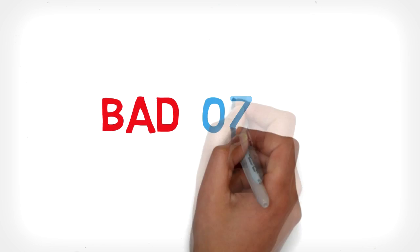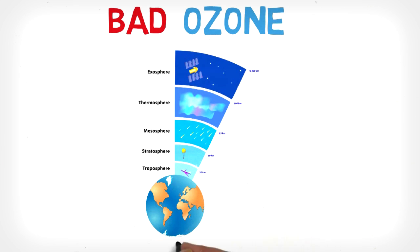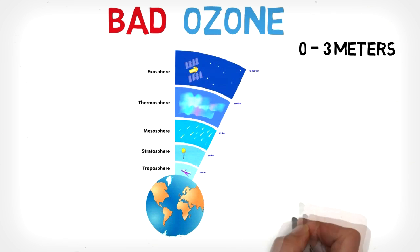But unfortunately, there is another type of ozone called bad ozone. This type of ozone molecules are found at the ground level of the troposphere, which is the lowest layer of the atmosphere, around zero to three meters above the ground.